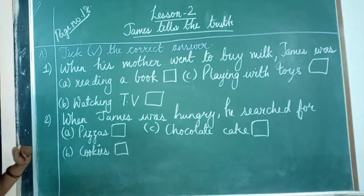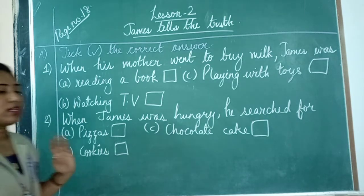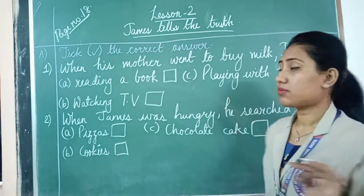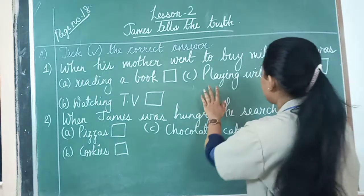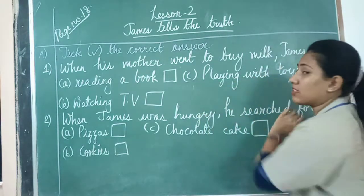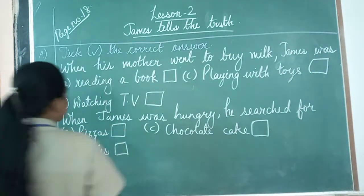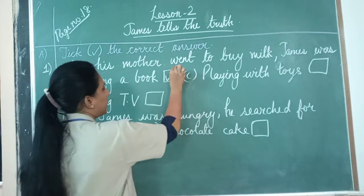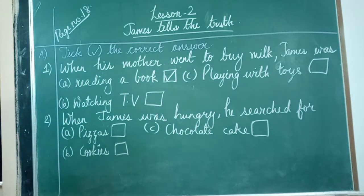The first option is the correct one. When his mother went to the market, James was reading a book and Jenny was playing with her dolls. So the answer is option A — reading a book. Put a tick on option A, everyone.